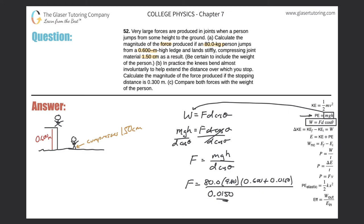And the cosine of the angle, we can just assume they're pointing in the same direction. The force should be positive, so that's fine. So now, let's take 80 times 9.8, multiply that by 0.6 plus 0.015, and divide by 0.015. We get a value of 3.21 times 10 to the fourth in terms of Newtons. So that's the answer for letter A.